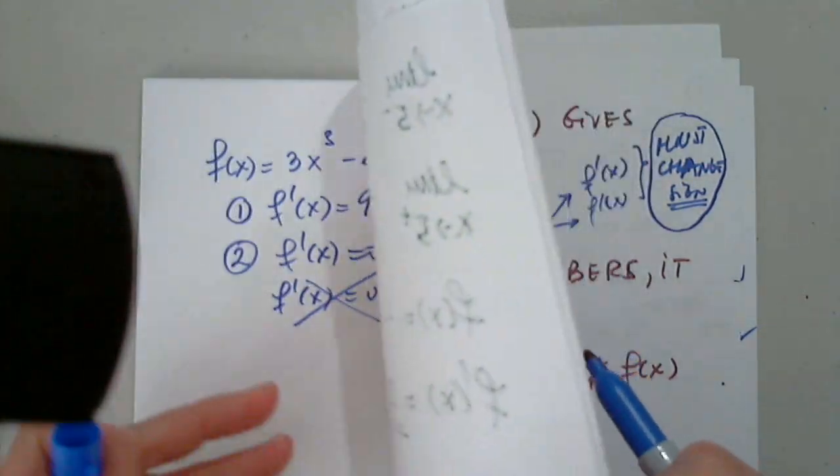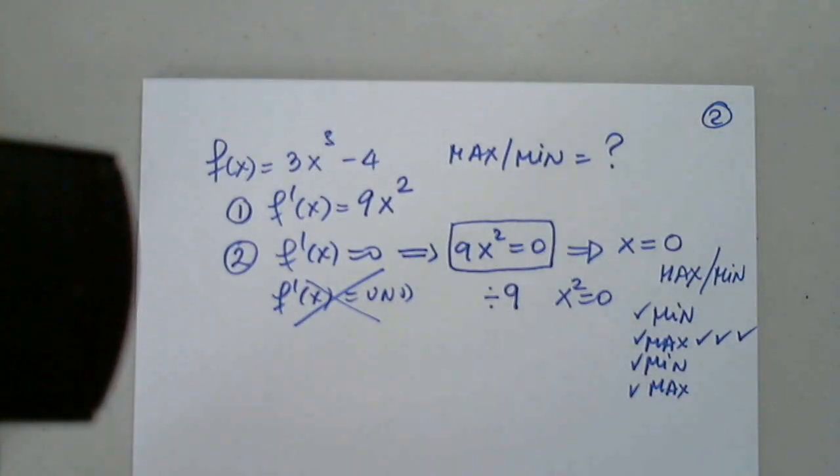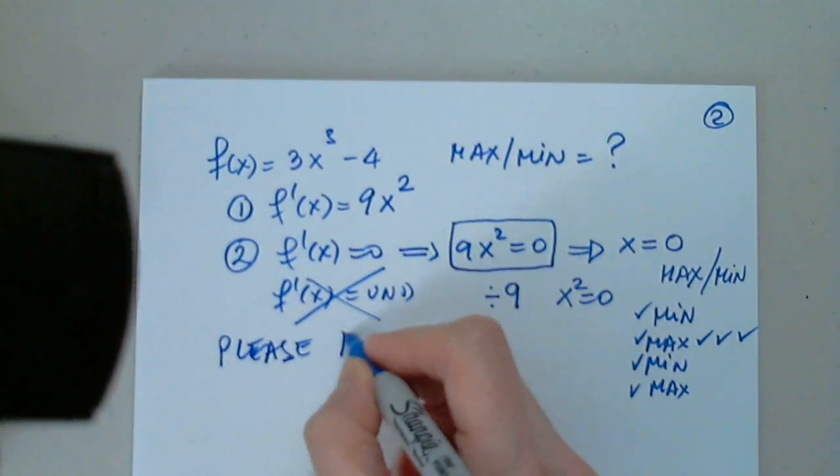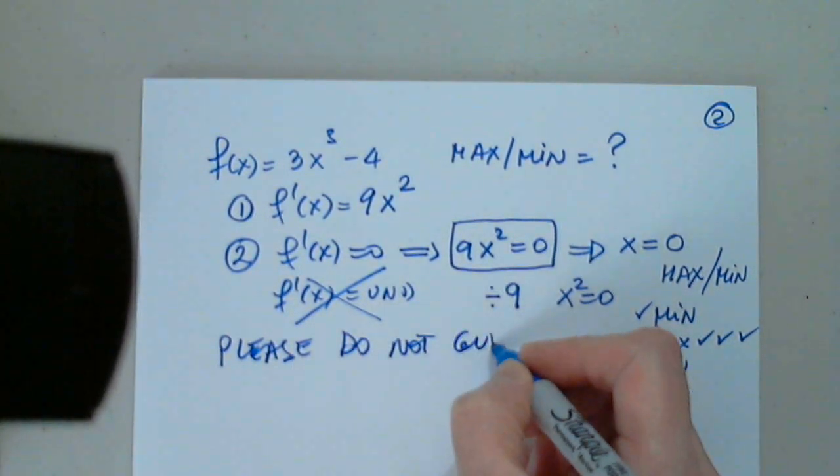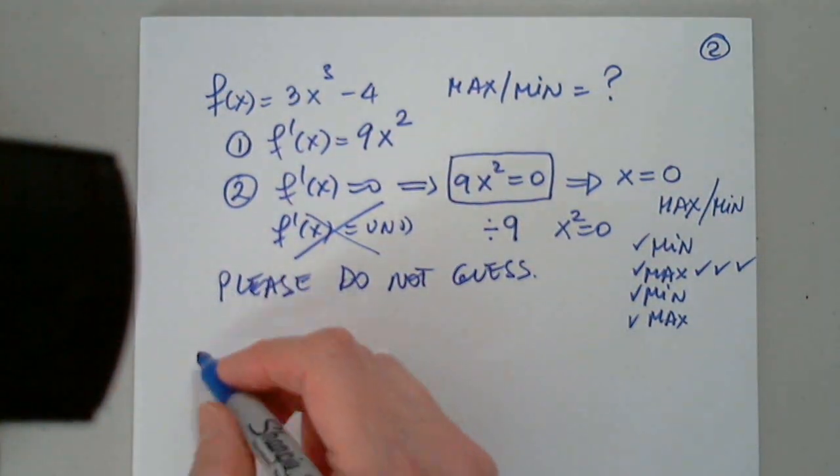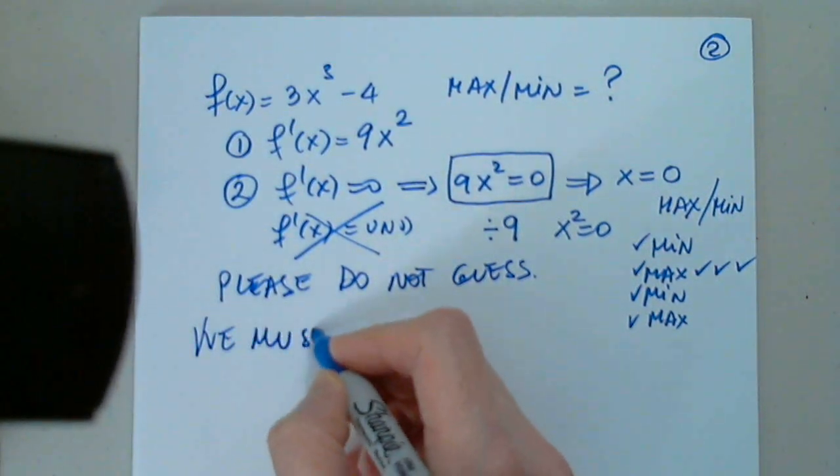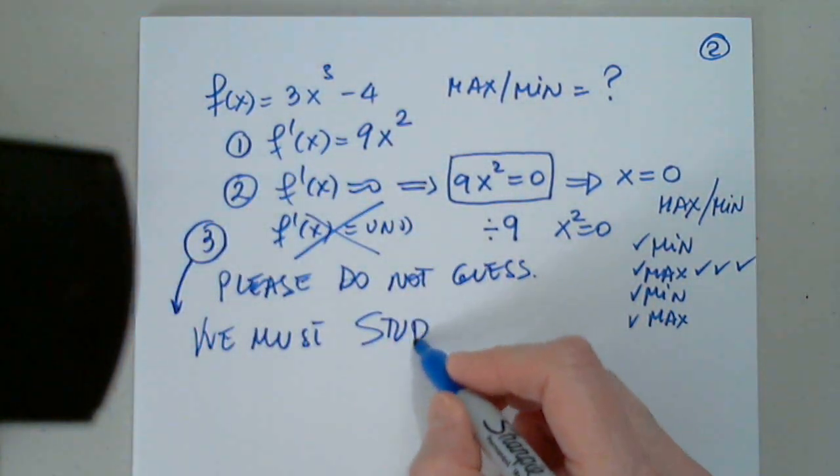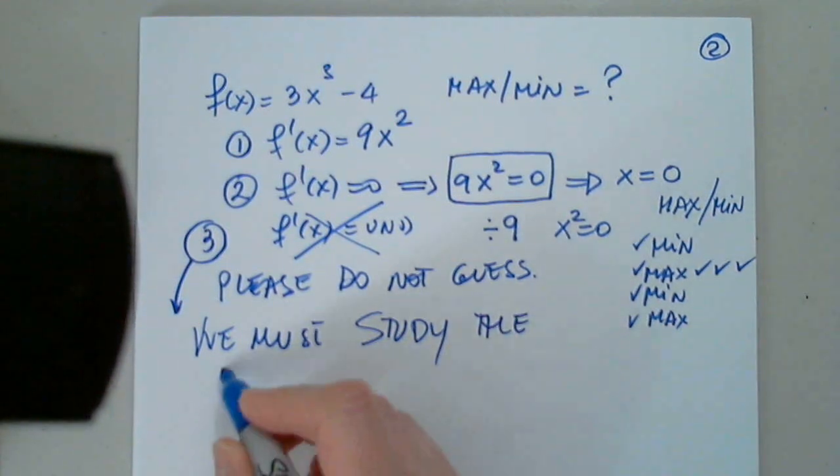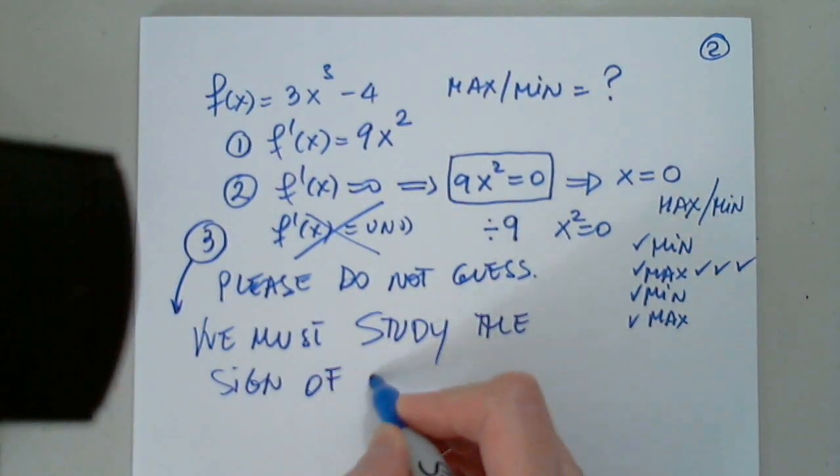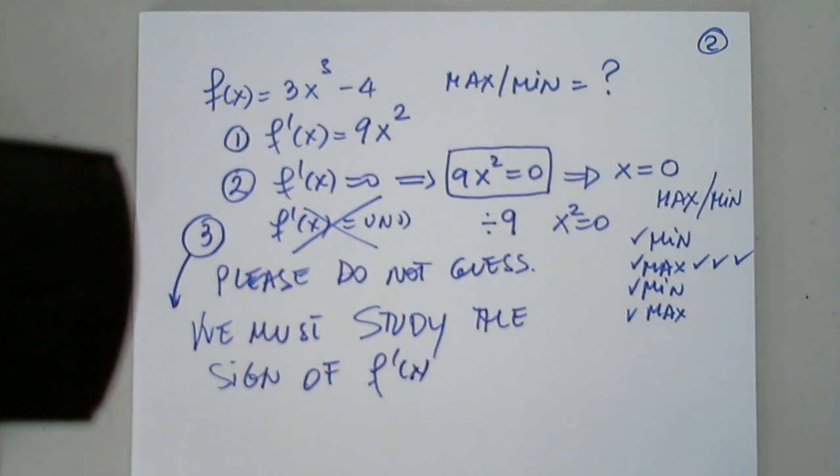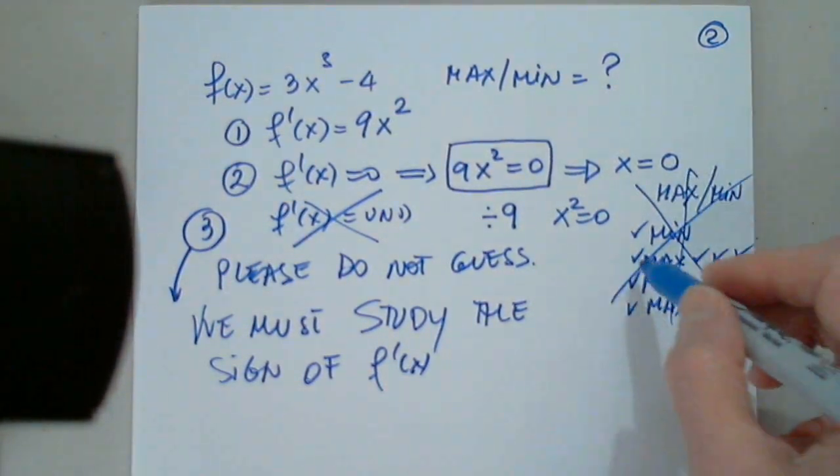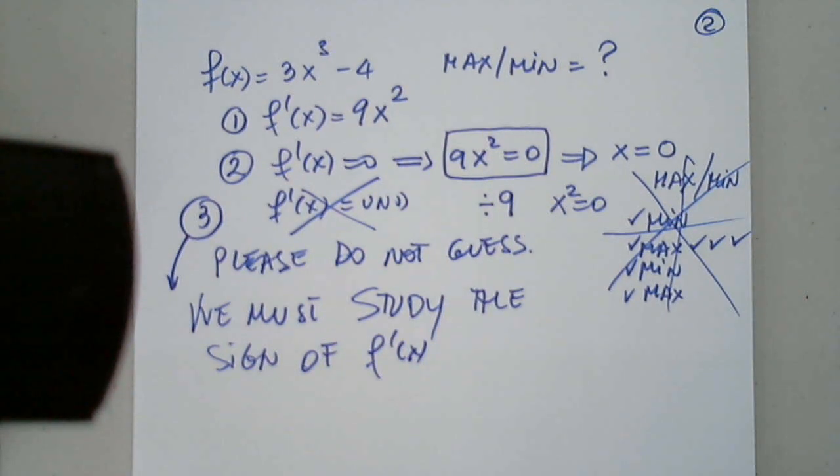And then we have to check. If we don't check the sign, we cannot conclude whether that is a max or a min or none of the above. So I'm begging you not to guess. Please, please, do not guess. Why? We must study, that's step 3. We must study the sign of f prime.